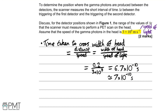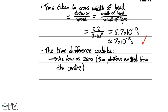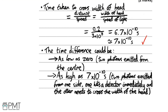The first mark is for making this calculation. The second mark is for expressing this as a range: delta t could be as low as zero, when two photons are emitted from the centre and take equal time to reach each detector, and as high as 7 × 10⁻¹⁰ seconds, when one photon immediately enters a detector and the other takes that full time to cross the head. Two marks.